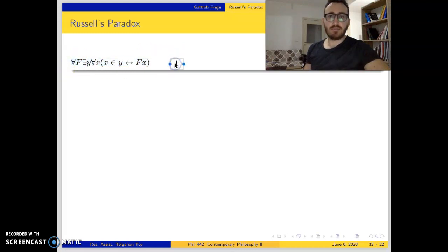This is our starting point. Frege accepts that for all f there is an extension of f. x is an element of the extension of f if and only if x is an f. If the concept f is being a philosopher and y is the extension of being a philosopher, then x is an element of this extension if and only if x is a philosopher. Socrates is an element of this extension if and only if Socrates is a philosopher.